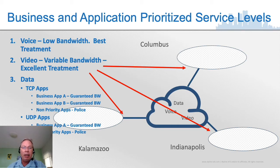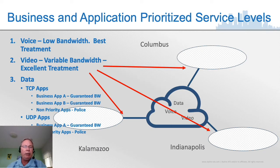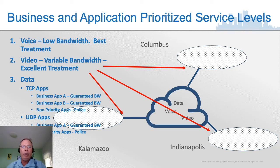In a corporate environment, voice requires low bandwidth but typically requires the very best treatment. Video bandwidth can vary and we want to give it excellent treatment, but we still typically want to give voice better treatment. After that, data — is it TCP or UDP? Is it critical to the running of the enterprise or is it unofficial traffic? These are the types of things we want the network to tell the difference in, and then treat them differently — unfairly.